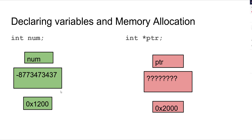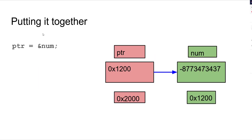Here are some ways to declare variables and allocate memory. int num is a regular integer, and if you don't initialize it, it's going to have a large negative number. This is its address — say 0x1200. int* ptr is the name of a pointer. It is not pointing to anything; it has its own address. The question mark says it's not pointing to anything because we haven't assigned anything. Now putting it all together: ptr = &num. PTR is a pointer, it can only hold an address. So ptr = &num takes the address of num, which is 1200, and puts it into ptr. Now PTR is pointing to num.